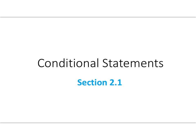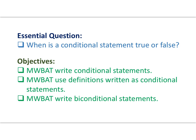This is the first section of Unit 2, all about logic and reasoning. Section 2.1 will start with conditional statements. Our essential question: when is a conditional statement true or false? Our objectives: mathematicians will be able to write conditional statements, use definitions written as conditional statements, and write bi-conditional statements.